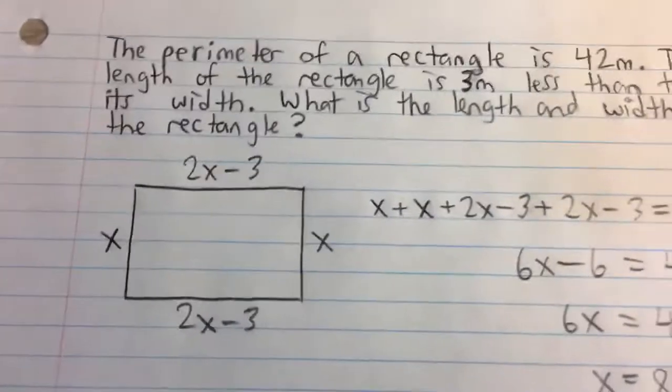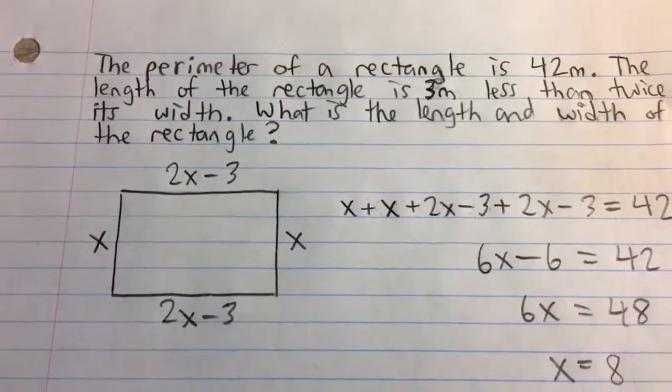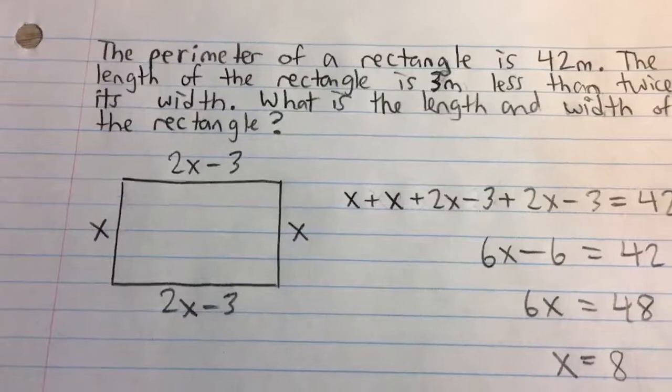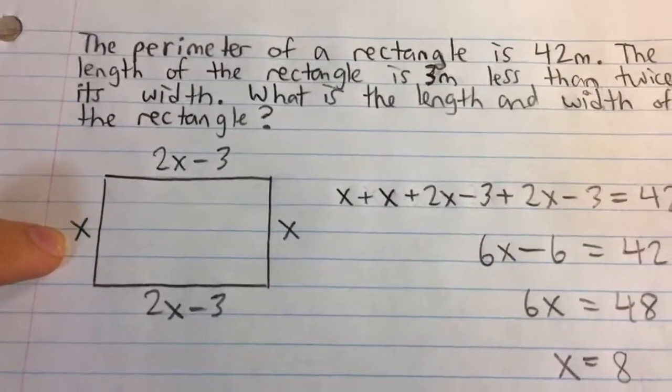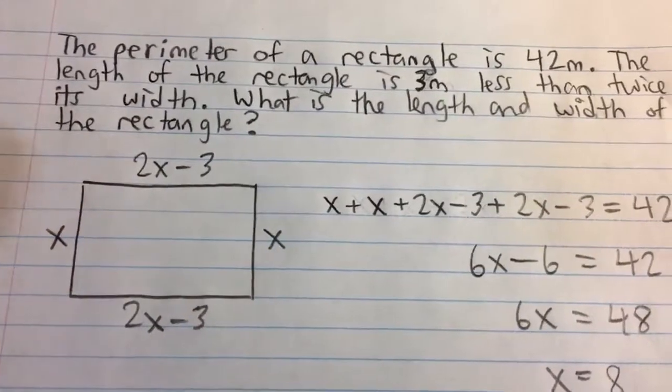So here's our rectangle. And it says that the length of the rectangle is 3 meters less than twice the width. So if the width was x, the width is typically the shorter side, so I labeled this as x and x.